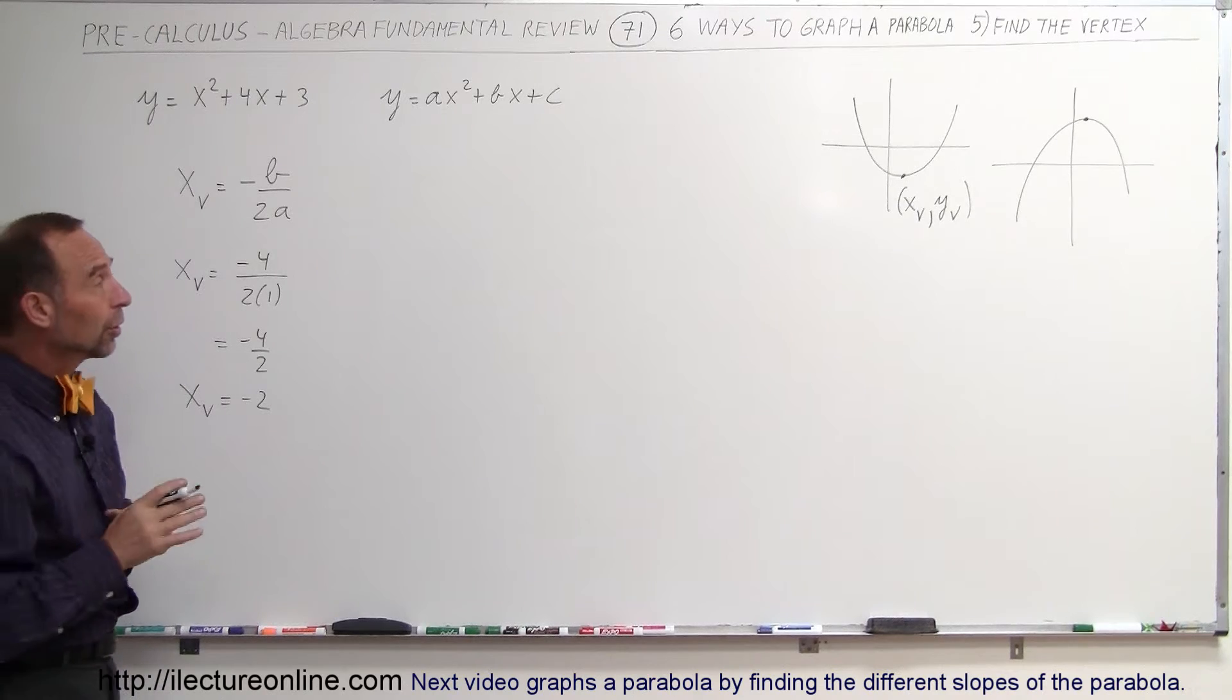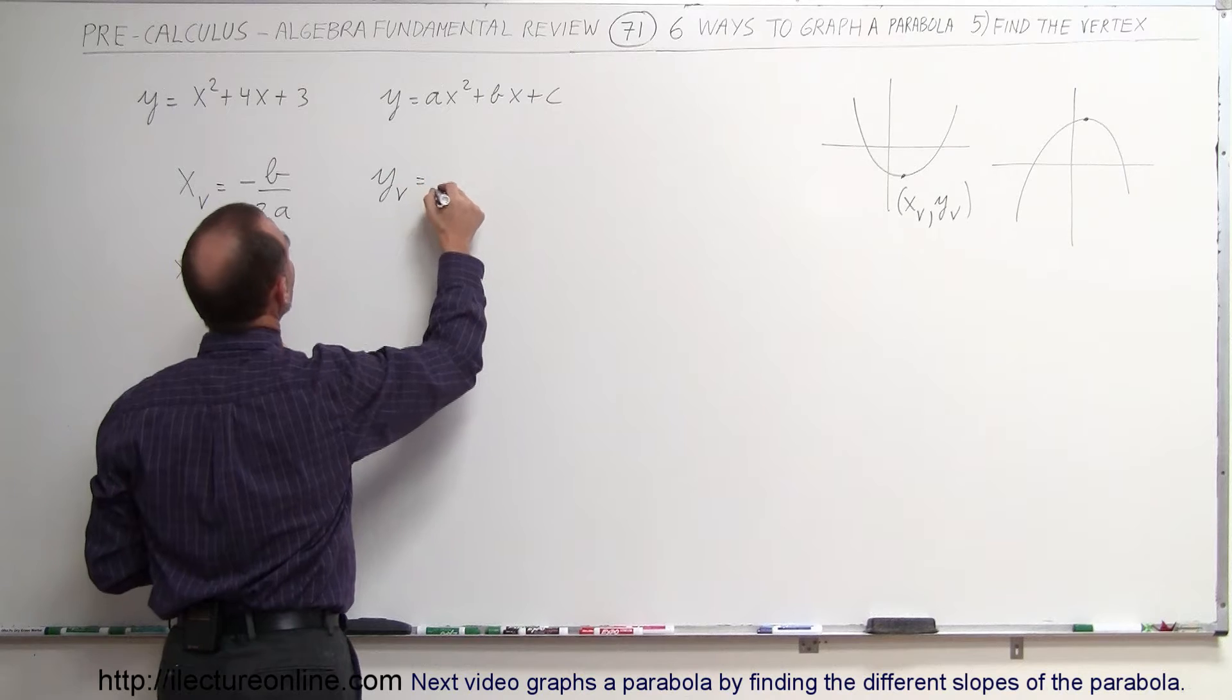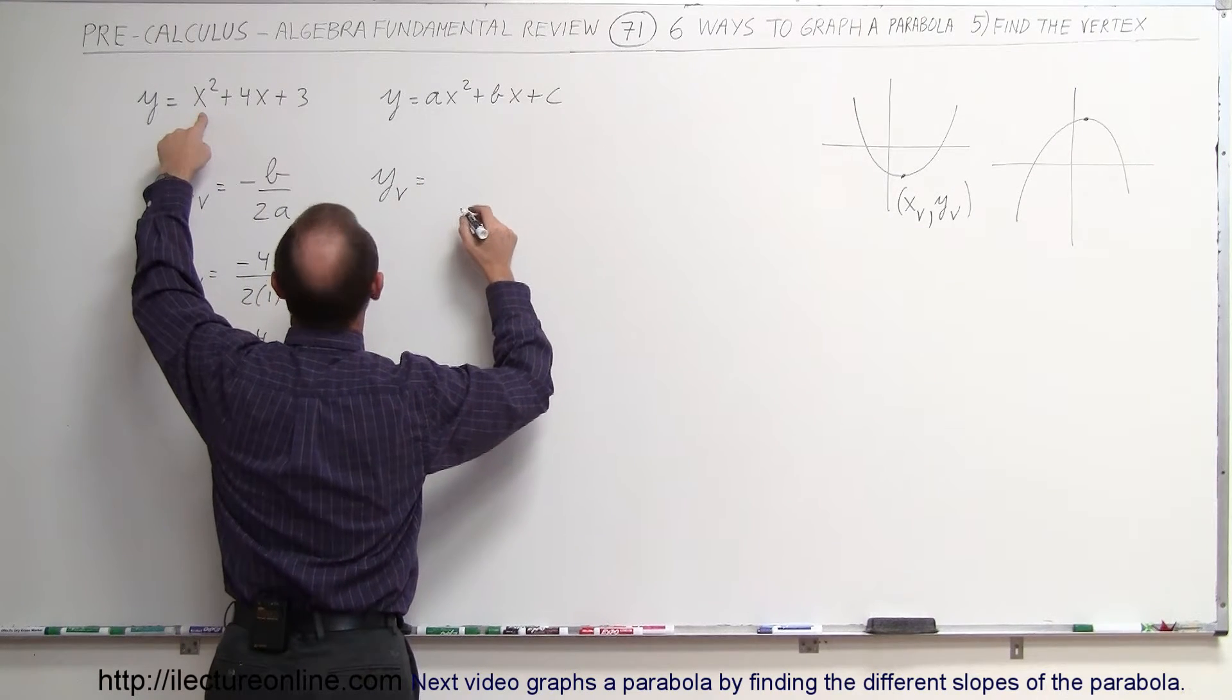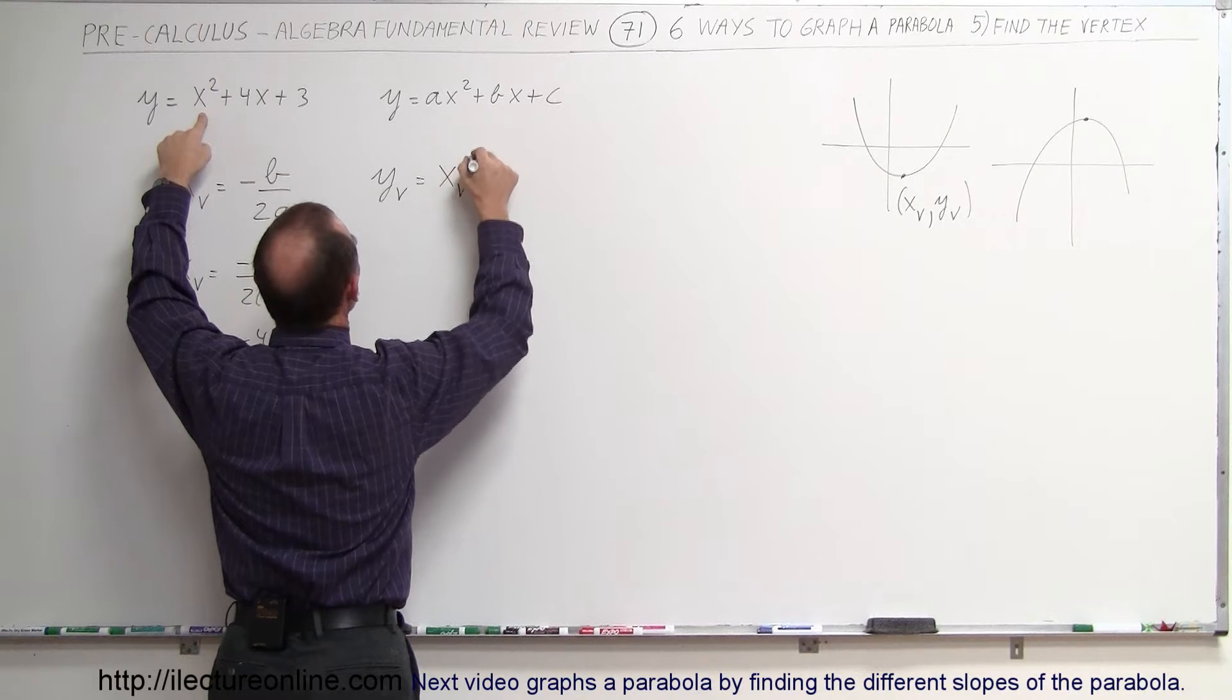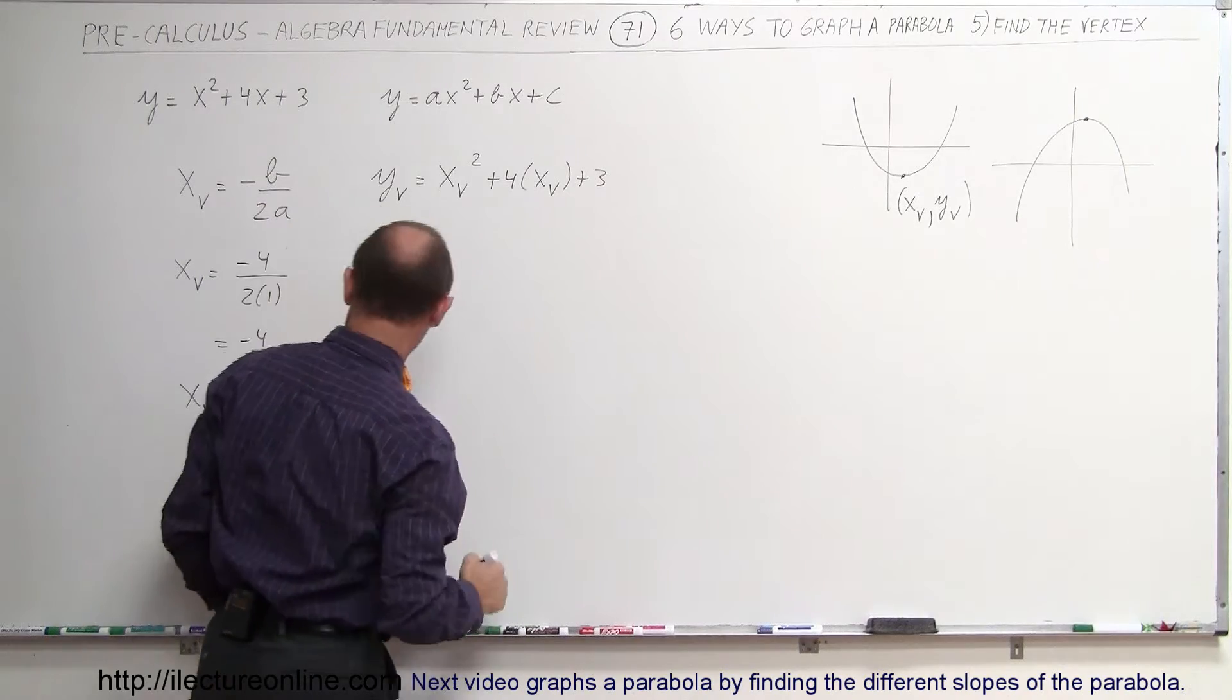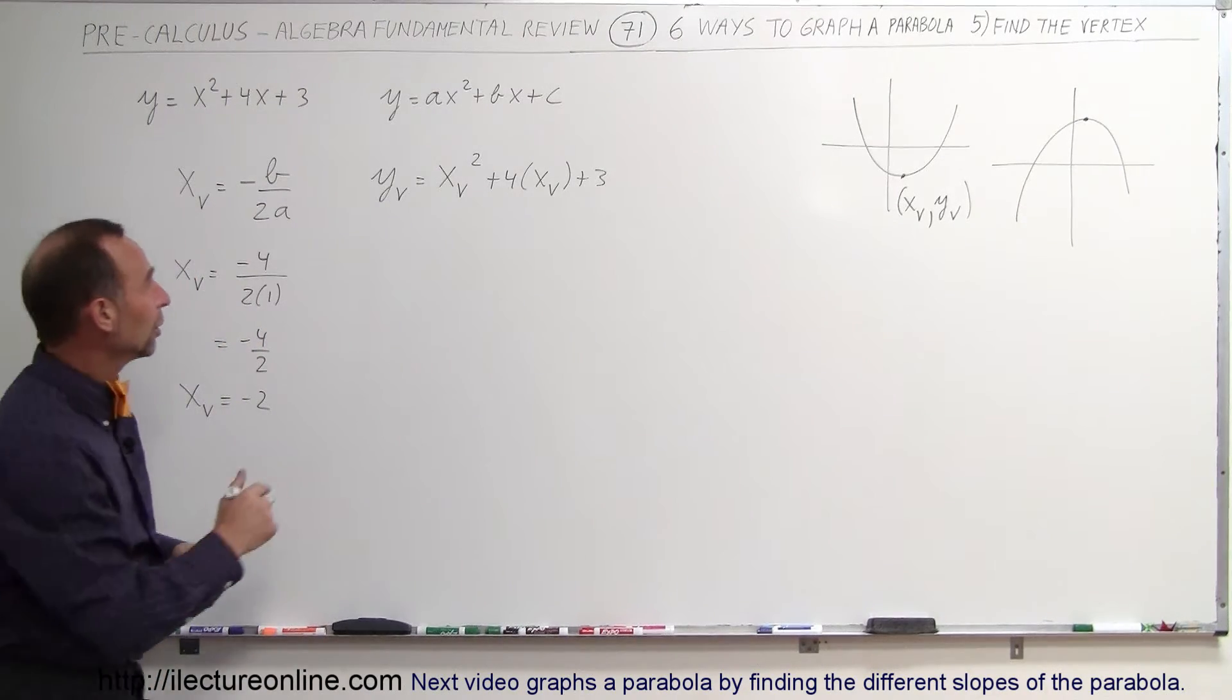So how do you find the y-coordinate of the vertex? Well, the y-coordinate can be found, y sub v is simply equal to the equation with x replaced by x sub v. So this would be x sub v squared, plus 4 times x sub v, plus 3. All we do is plug that value back in the original equation, and we get the corresponding y-coordinate.